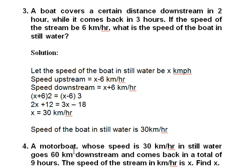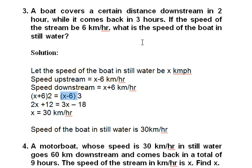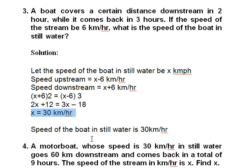In the case of downstream, the speeds add: x + 6 km/h. The boat covers the same distance downstream in 2 hours and upstream in 3 hours, so we set up: (x + 6) × 2 = (x − 6) × 3. Solving gives x = 30 kilometers per hour, which is the speed of the boat in still water.